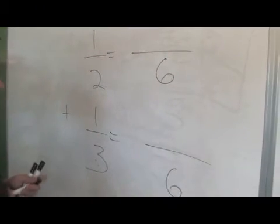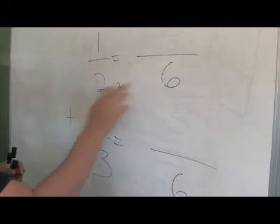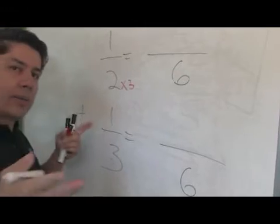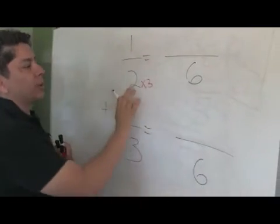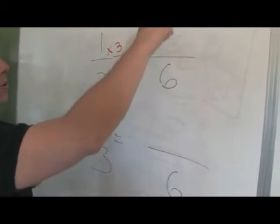And then ask yourself the question, 2 times what gave me 6? Well, 2 times 3 gave me 6. Whatever you do to the bottom, you do to the top. So if you multiply the bottom by 3, you have to multiply the top by 3. So 1 times 3 is 3.